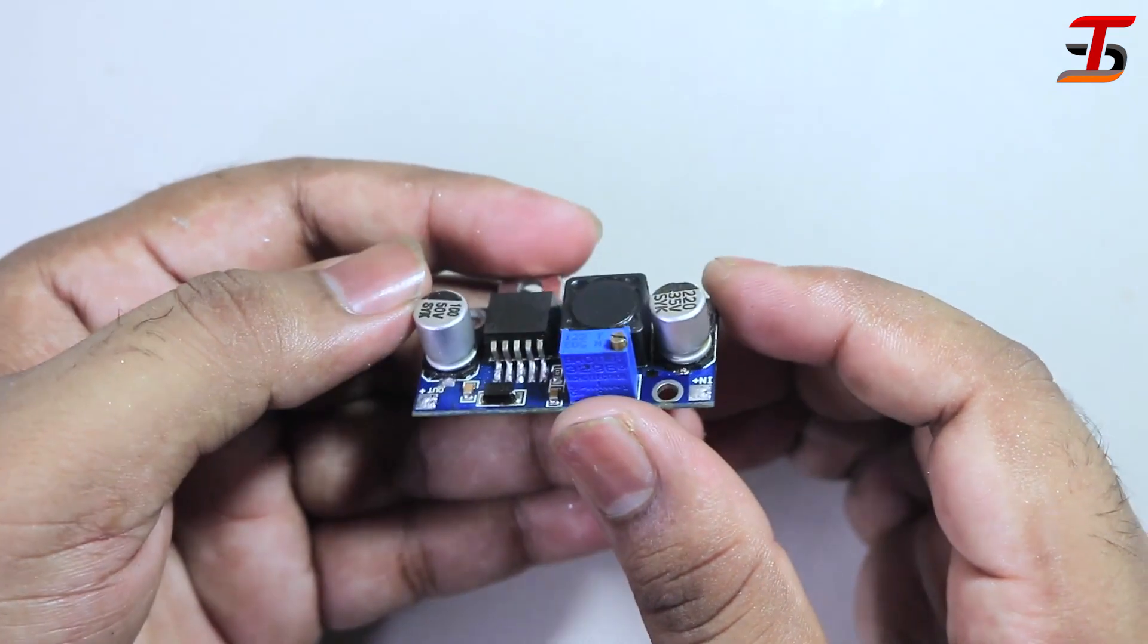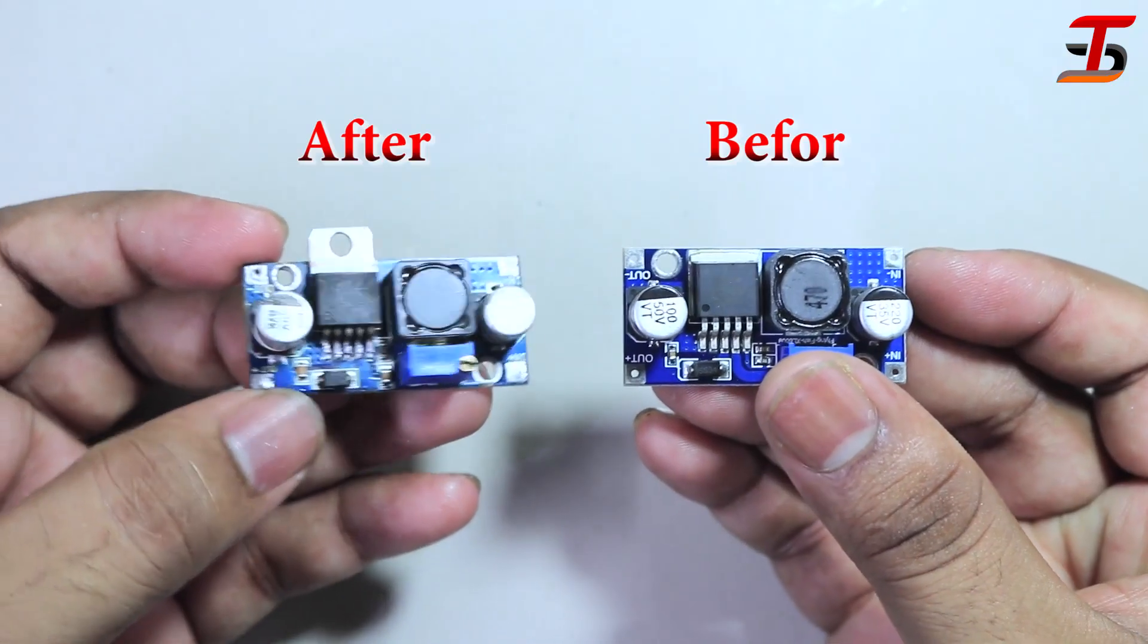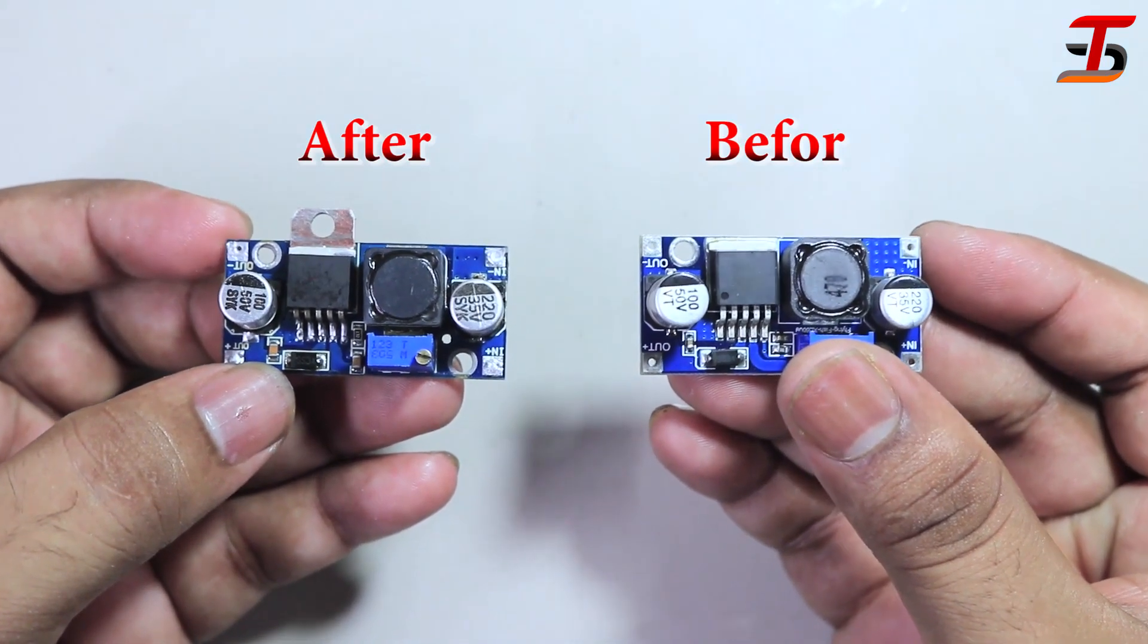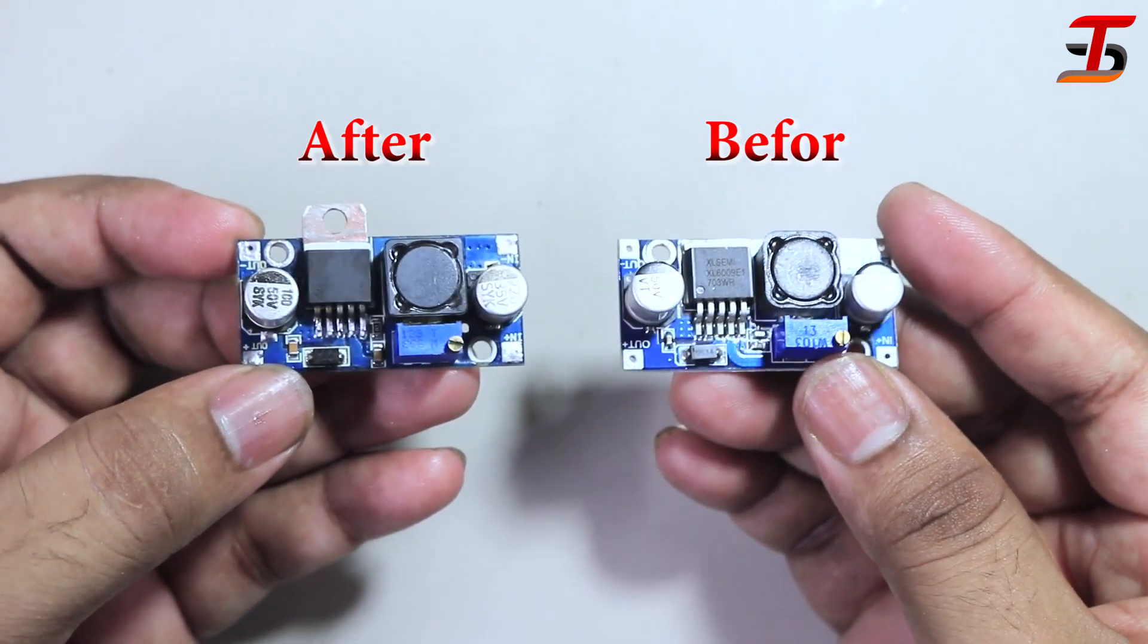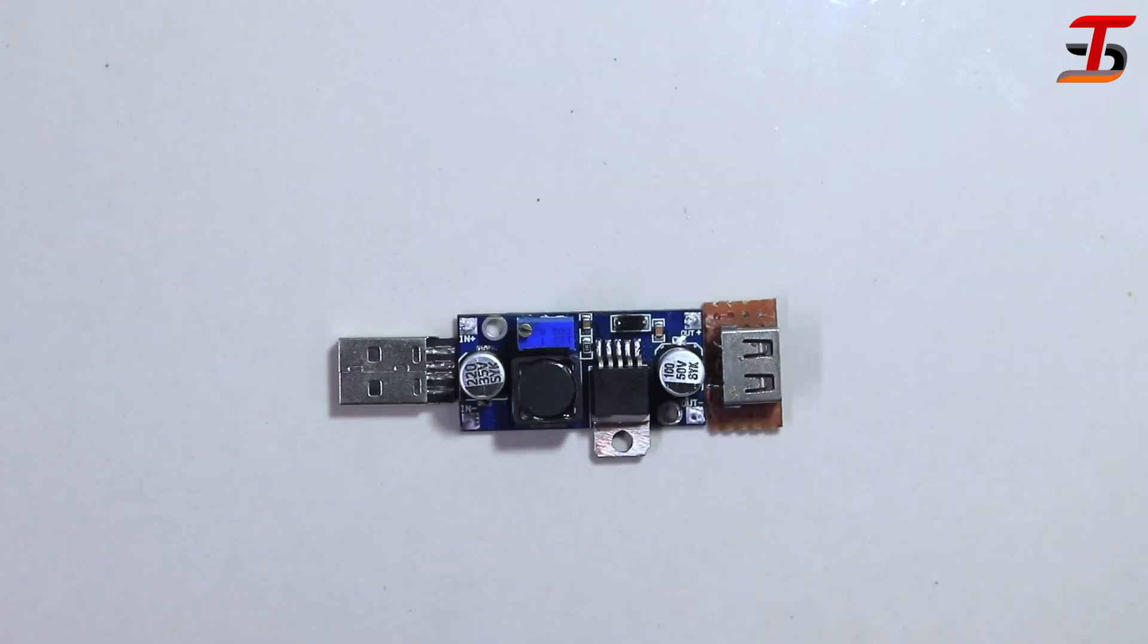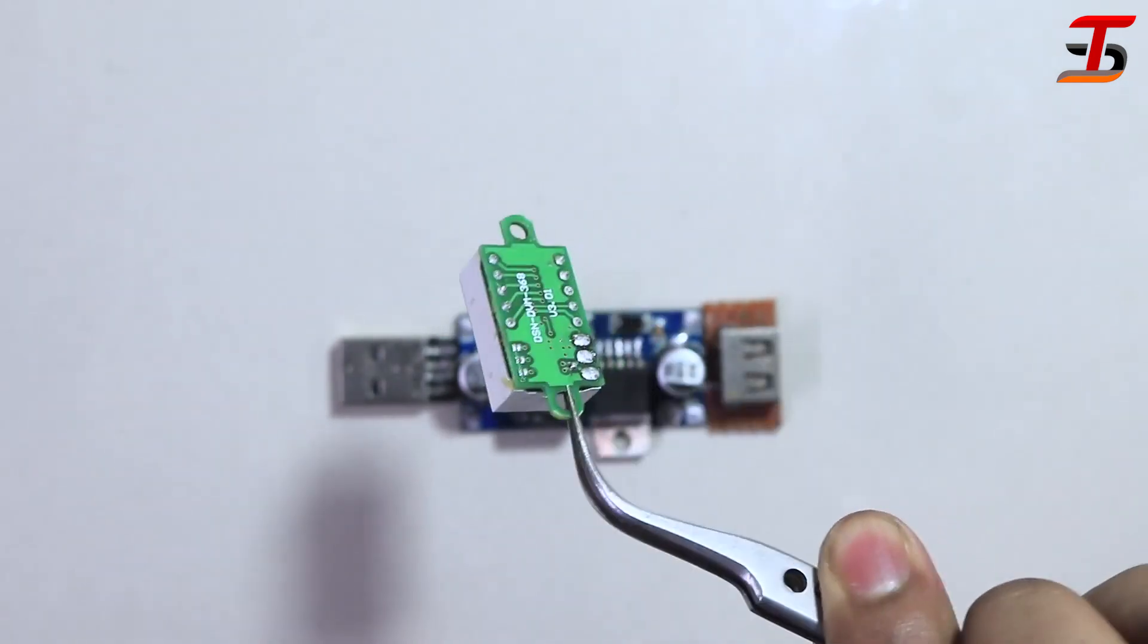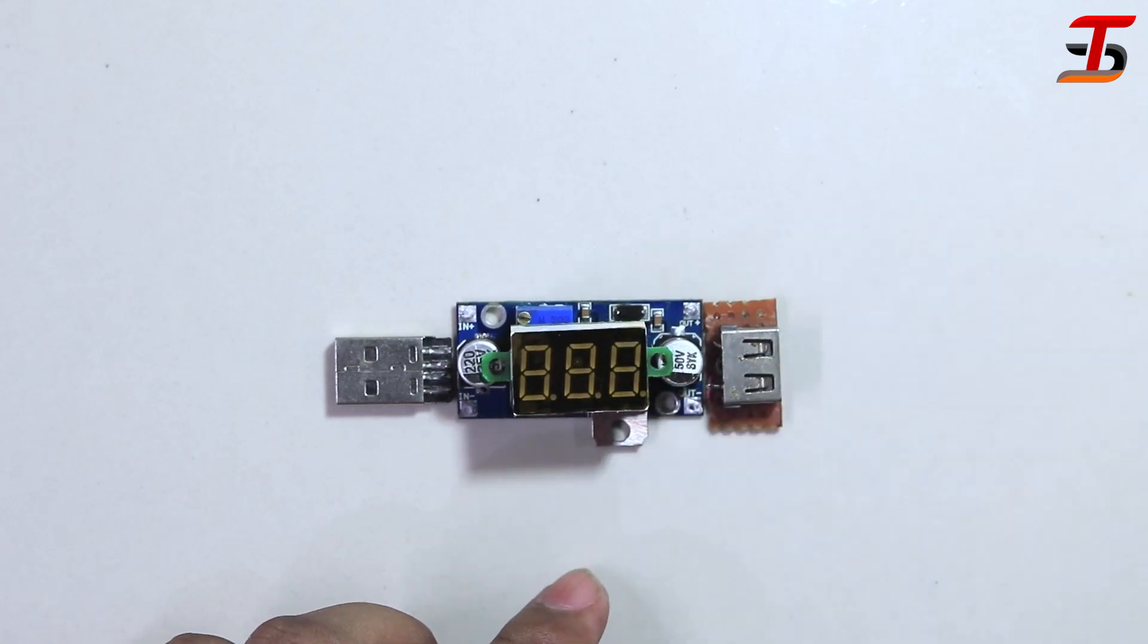You can see how it was like before and how it looks now. The device will look like this. It's a mini DC voltmeter. You can measure 0 to 100 voltage. To show voltage, here I used this meter.